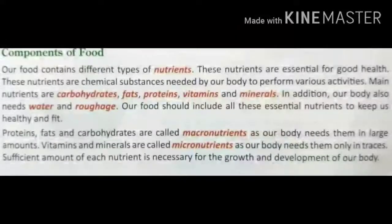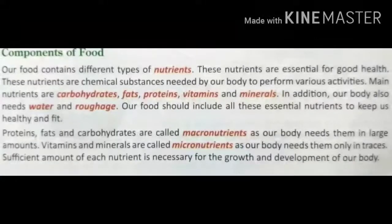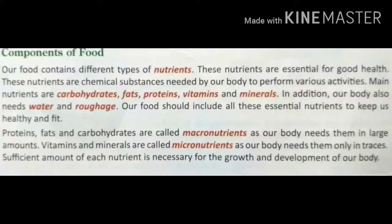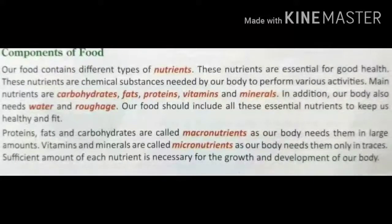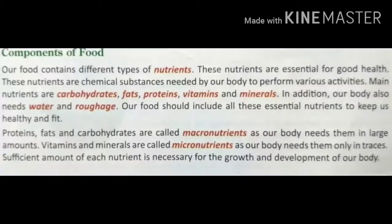After that we see: proteins, fats, and carbohydrates are called macronutrients, as our body needs them in large amounts. Vitamins and minerals are called micronutrients, as our body needs them only in trace — meaning very small quantities. Sufficient amount of each nutrient is necessary for the growth and development of our body. We need sufficient amounts of nutrients. In this way, we see the component of food.